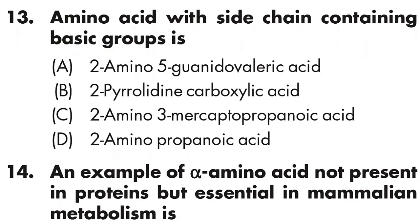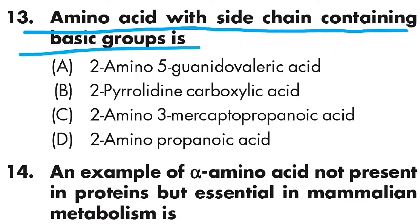Question number thirteen: the amino acid with a side chain containing a basic group is — Option A is 2-amino-5-guanidovaleric acid, Option B is 2-pyrrolidine carboxylic acid, Option C is 2-amino-3-mercaptopropanoic acid, Option D is 2-aminopropanoic acid. Option A is correct — 2-amino-5-guanidovaleric acid, which is arginine.